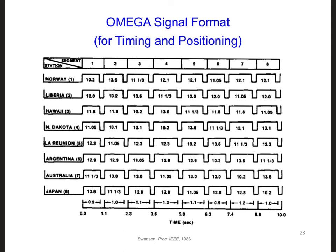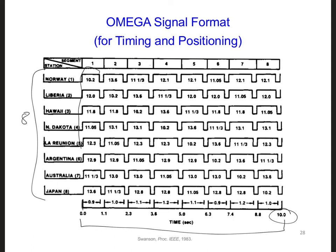This diagram shows how each of the eight transmitters transmitted over 10 seconds of time. They all turn on at the same time, like here at time zero, and transmit at the frequencies listed in the first column for 0.9 seconds. Then they all turn off for 0.2 seconds and turn on again with a different set of frequencies listed in the second column. This continued for eight segments over the 10-second time span and then repeated. As a result, the Omega system could provide timing information, and not just positioning information.